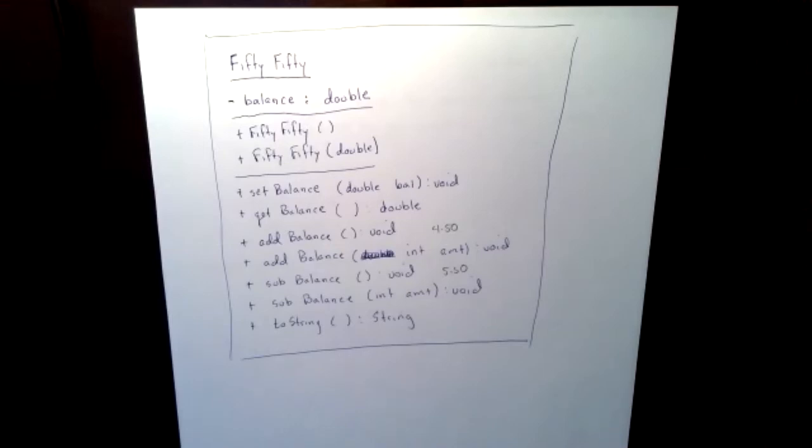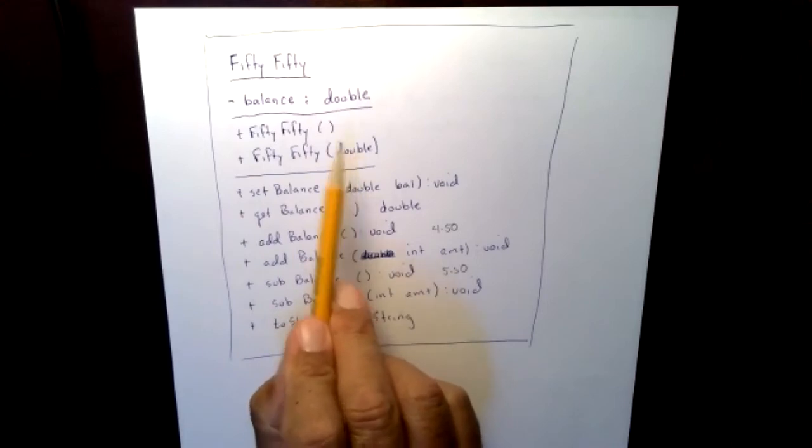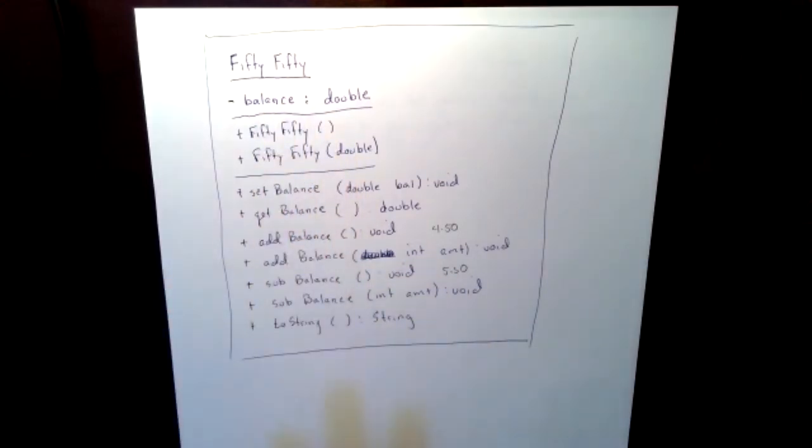I'm only going to have one field. I have minus balance double, means I'm going to have a field that's private that's going to be able to hold a double. I have two constructors, so I have a plus 50-50 with empty parentheses, and I have a plus 50-50 with a double. So here's what's going to happen. You're going to ask the user, how much money would you like to put in the machine?